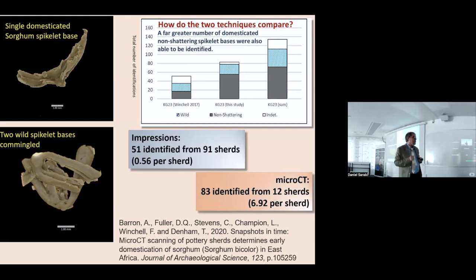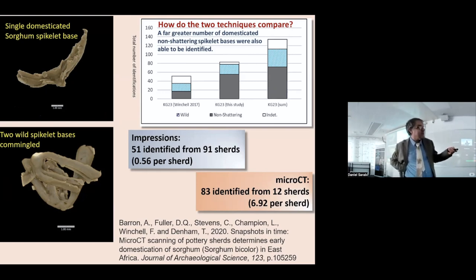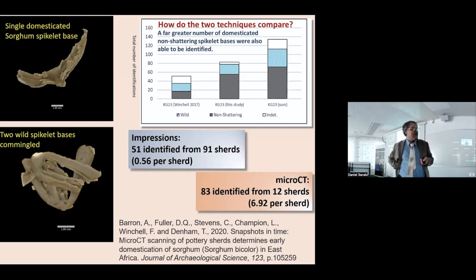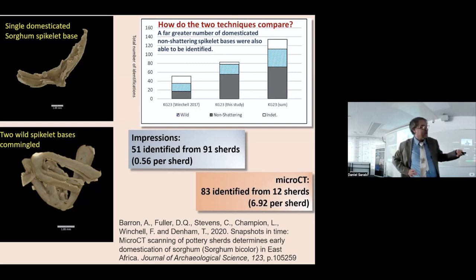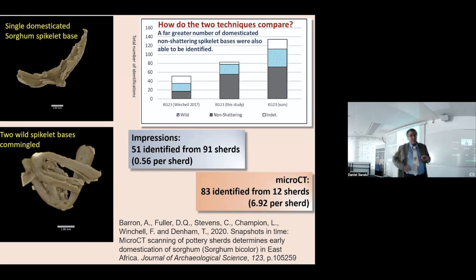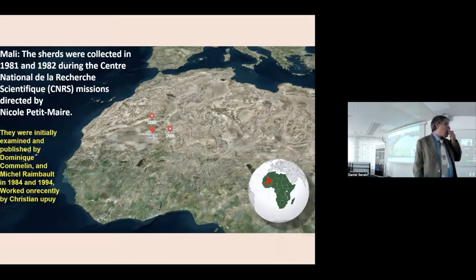These are the key statistics: if we look at what we published in 2017, we had about 51 identifiable specimens and about a third were indeterminate. In this new micro-CT study at KG-23, from only 12 sherds we produced 83 identifiable specimens, with 5% or less indeterminate. It increased the number of identifiable sorghums per sherd to about seven, whereas before we had less than one. So a much higher return rate.